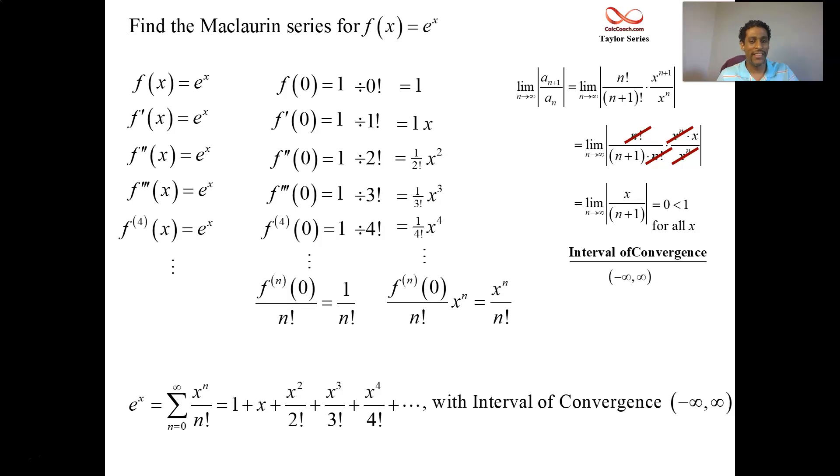And so when you get this case, when you're doing the ratio test and you get a 0 out for the limit, there's nothing that can make it diverge. It converges for all x. And a technical way to say that is it's from minus infinity to infinity. So we did it. And we're going to add this to our list. Remember we started building a list of functions that we know the power series representation for. We have four of them. This is number five. Let's go ahead and get sine x.